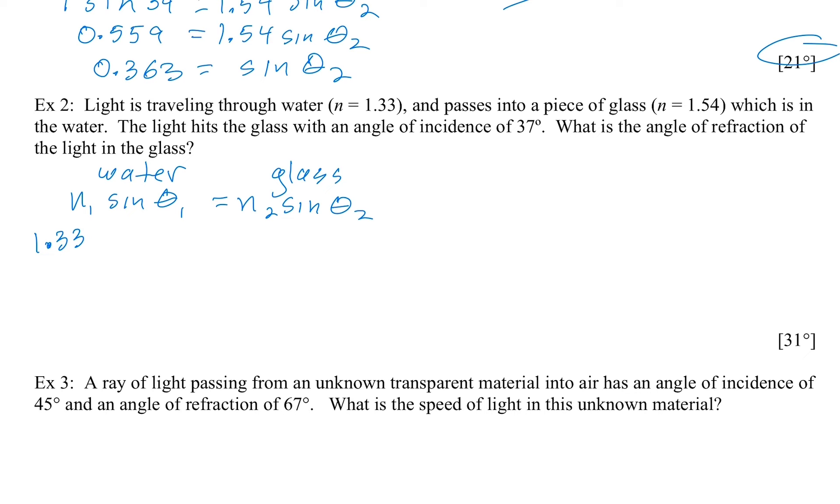Getting back to this angle of incidence of 37 degrees. So angle of incidence means in the first material as it's going towards the surface. So this is sine 37 degrees equals N2, which is 1.54 times the sine θ2.